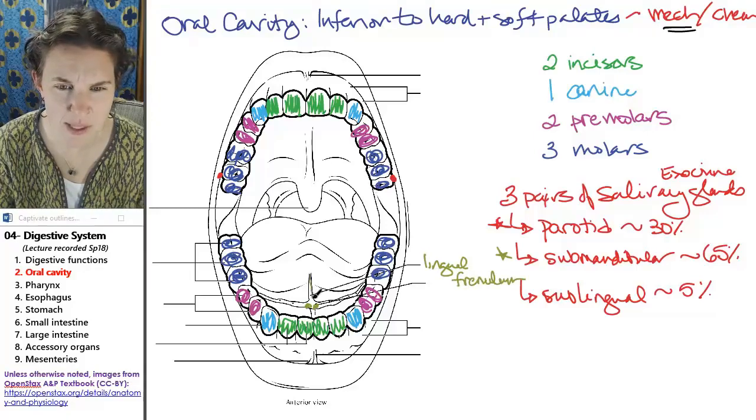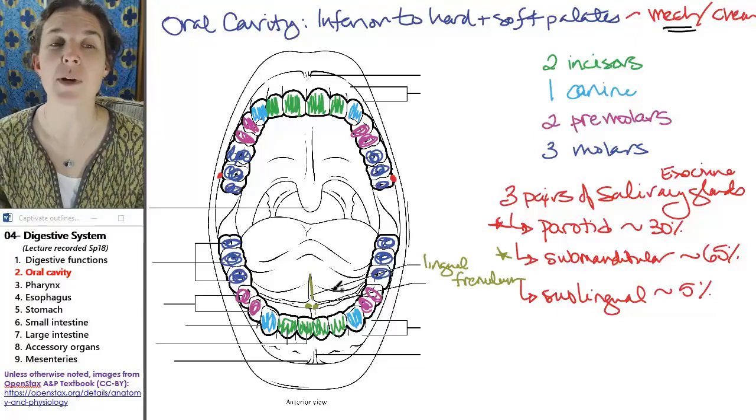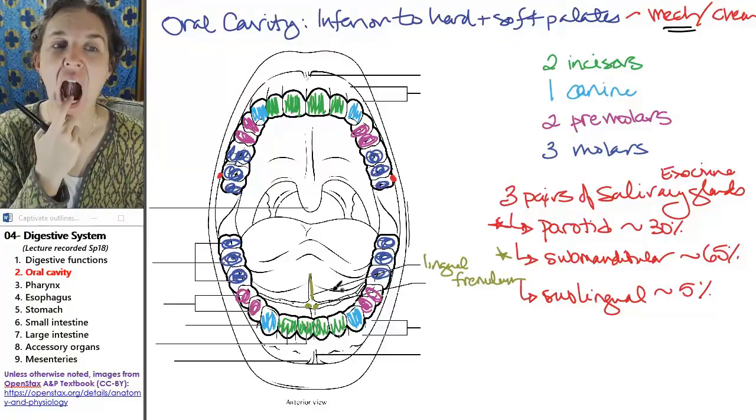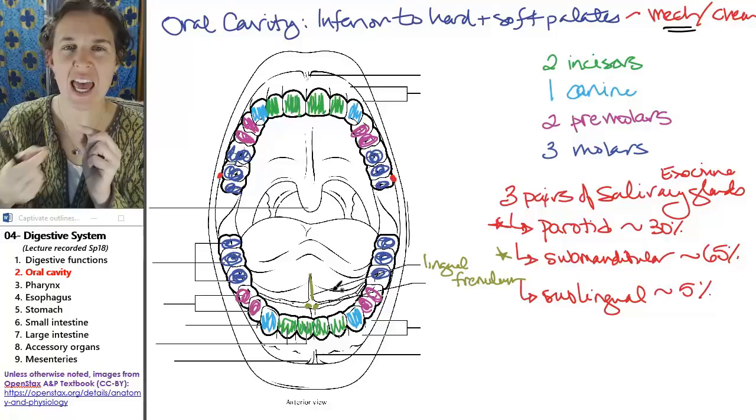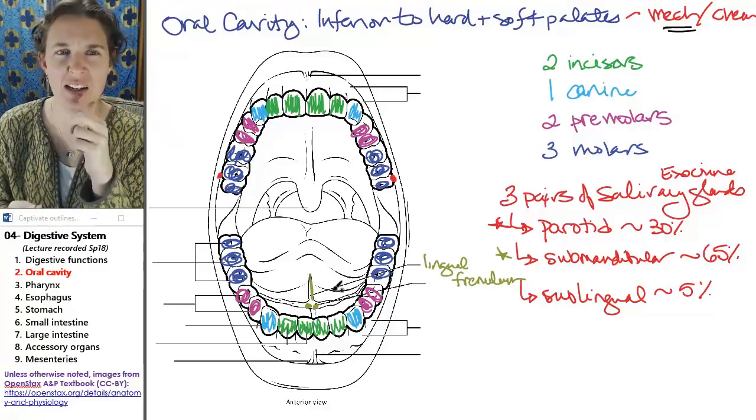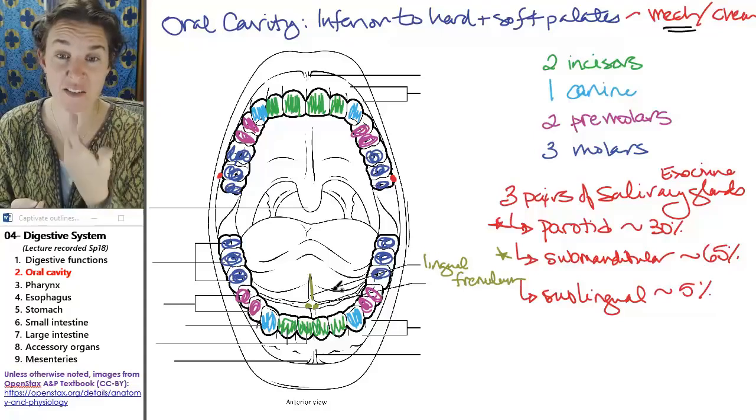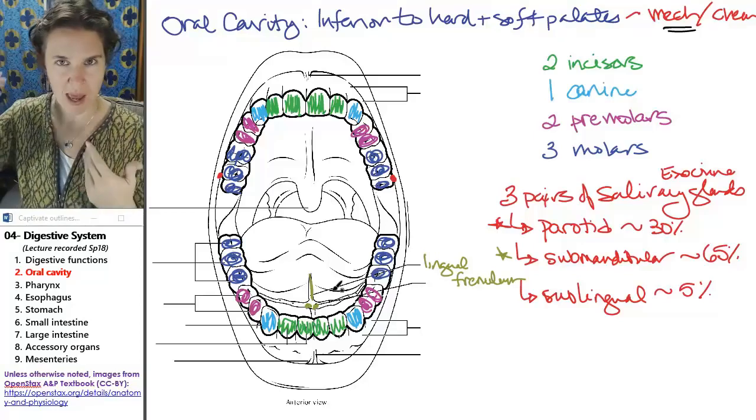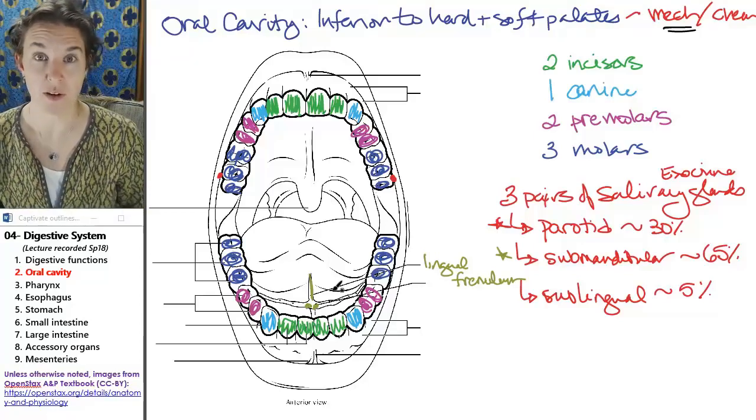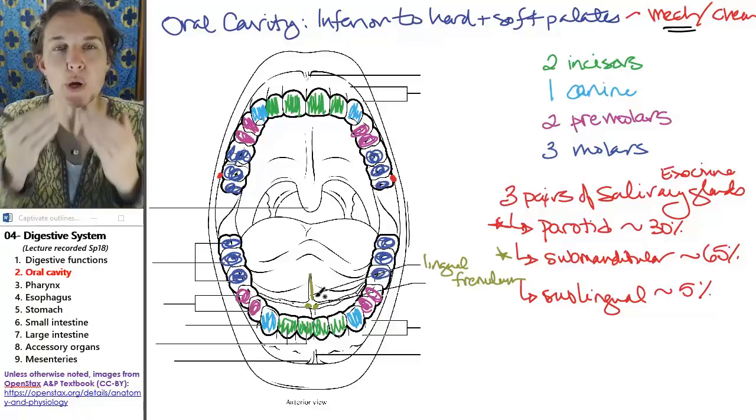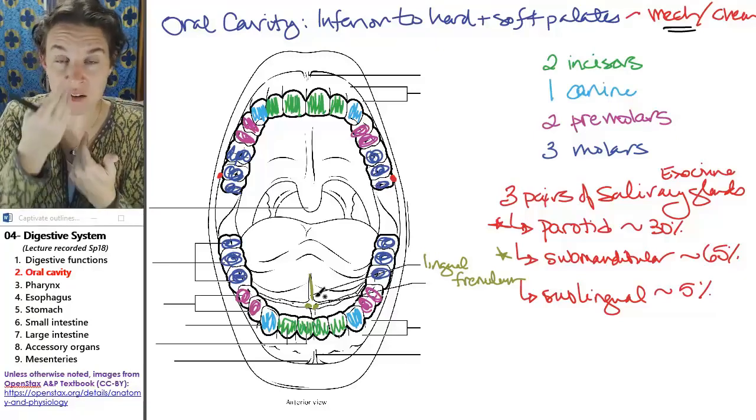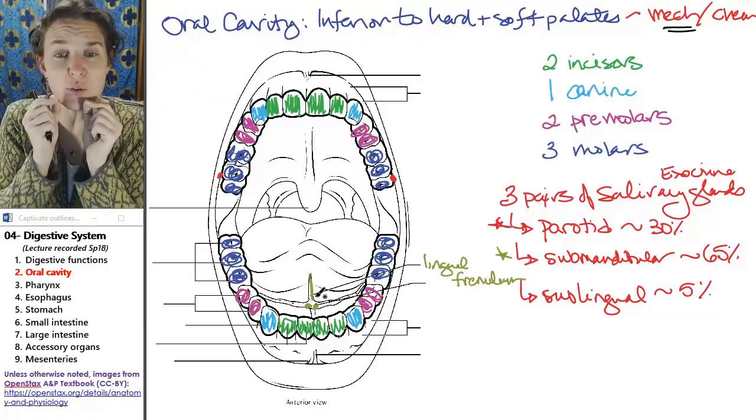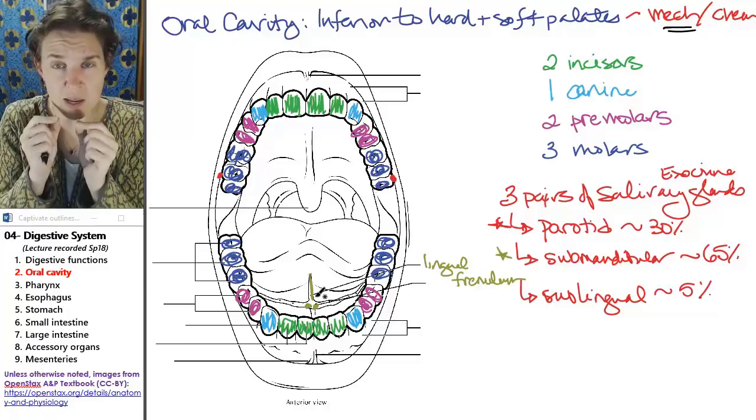And the lingual frenulum is this thing. Now, take a look at under my tongue. It looks like a line, and you can feel it. Like, feel it on yourself. It's like a piece of tissue that attaches to your tongue and sort of keeps your tongue from flipping back into the back of your throat. Super handy. Don't let that happen. So lingual frenulum is down the midline of your tongue. And on either side of that thing are two little ducts from your submandibular glands.